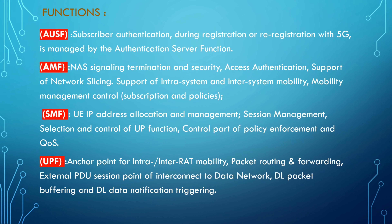Looking at individual function responsibilities: AUSF handles subscriber authentication, managing authentication during registration or re-registration with 5G. AMF handles NAS signaling termination, security and access authentication, supports network slicing, and handles intra-system and inter-system mobility management control, including subscription policy. SMF handles UE IP address allocation and management, session management, selection and control of the UP function, and control of policy enforcement and Quality of Service.